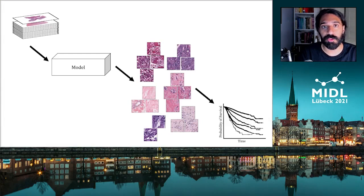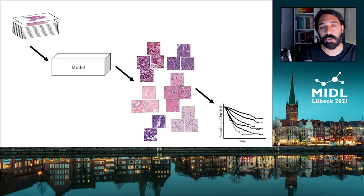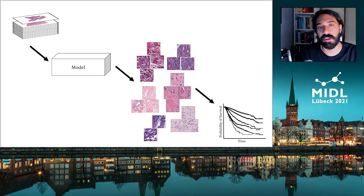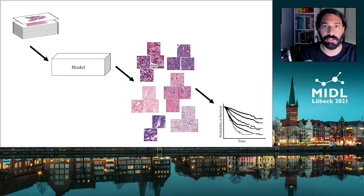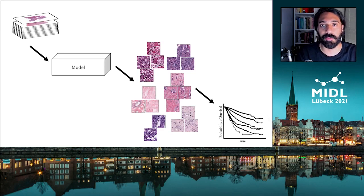In our previous work, we used deep unsupervised clustering to find morphologies that may correlate to survival. Our autoencoder-based model used a clustering function to learn reoccurring patterns that exist across the dataset and see if any of them correlate to survival. This is a naive way of discovering subtypes and survival modeling.